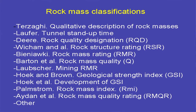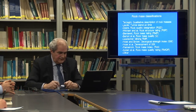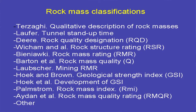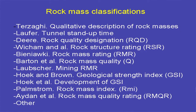Rock mass classifications serve different purposes. Terzaghi's qualitative rock mass description was the first classification, defining dead loads over a tunnel, still in use today. RQD, the Rock Quality Designation, was established to put numbers in geology. Wickham et al.'s RSR system is intelligent but not well established worldwide. Bieniawski and Barton's most well-known classifications — Rock Mass Rating and Rock Mass Quality — were established to give recommendations for supporting and reinforcing underground structures, with extensions to slopes.